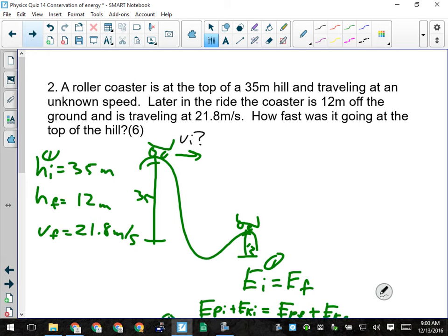It is traveling at an unknown speed. So in other words, we're looking for what VI is. OK. Later in the ride, it's 12 meters off the ground moving at 21.8 meters per second. How fast was it going at the top of the hill? Alright. Give them a mark for their givens. Maybe they drew a better picture than me or they just wrote down the numbers, whichever. OK. One mark for that.